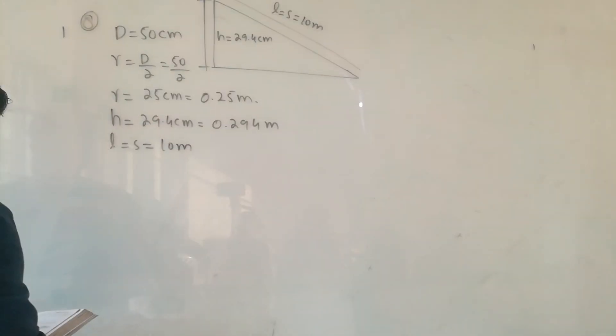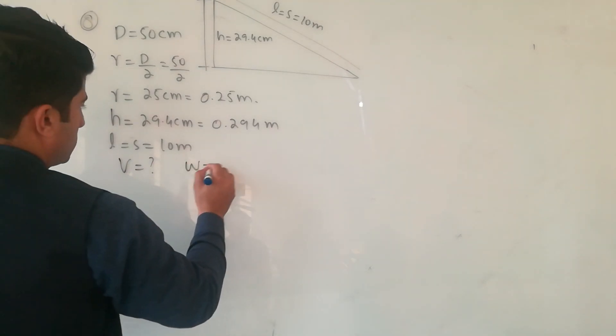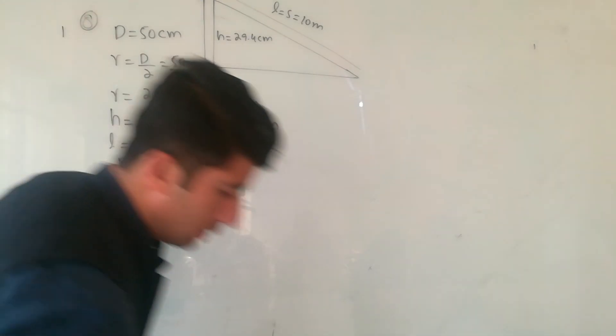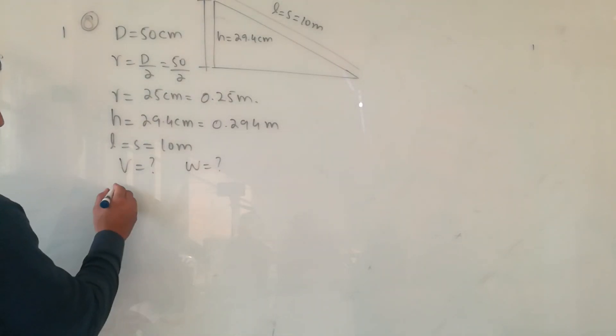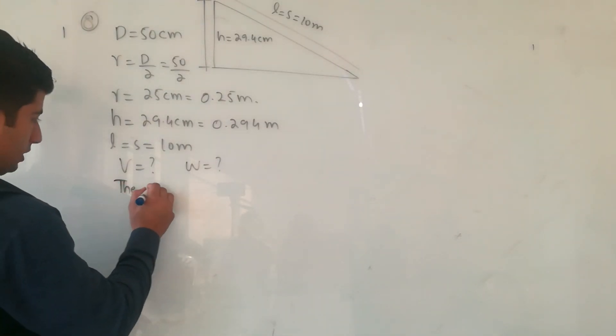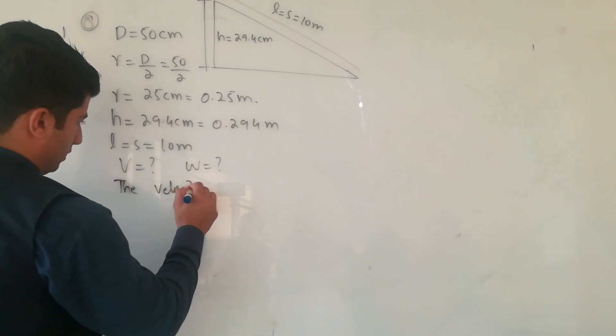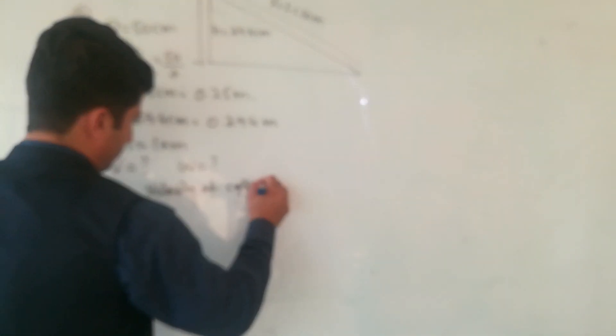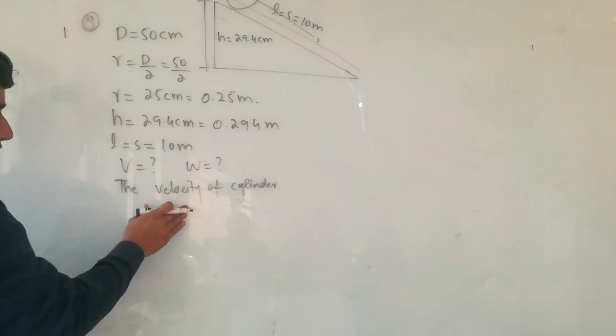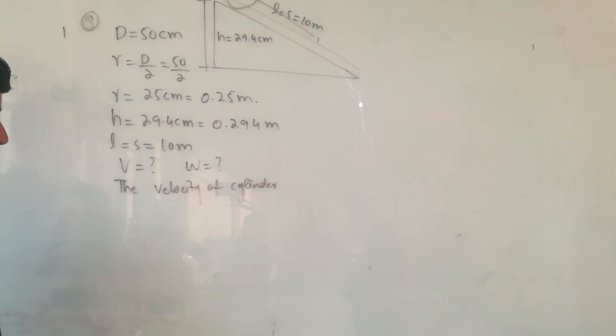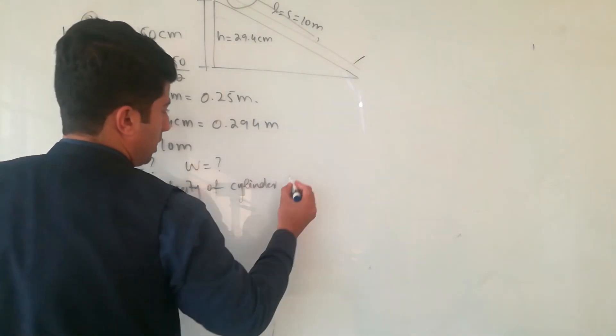Find its linear and angular speed. We need to find the cylinder's linear speed and angular speed at the bottom. So we need to find the speed or velocity of the cylinder at the bottom.